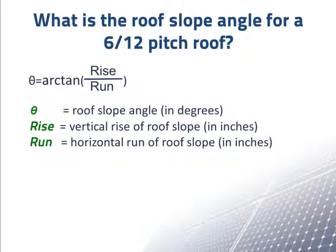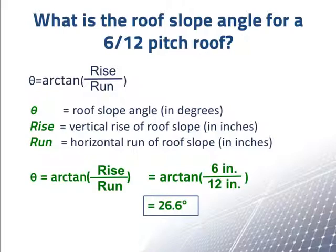Plugging the rise of 6 inches and run of 12 inches in and taking the arc tangent gives a roof slope angle of 26.6 degrees.